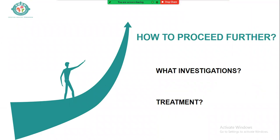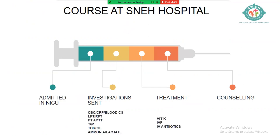How would you proceed further? What investigations would you add and what treatment changes would you consider? Please write it down. We admitted the child to the ICU and sent a septic screen including blood culture, complete LFT, RFT, PT/APTT, triglycerides, TORCH, ammonia, and lactate. Vitamin K, IV fluids, and antibiotics were started. Counseling was also essential — it was peak lockdown, parents had come from Rajkot and were anxious to return.